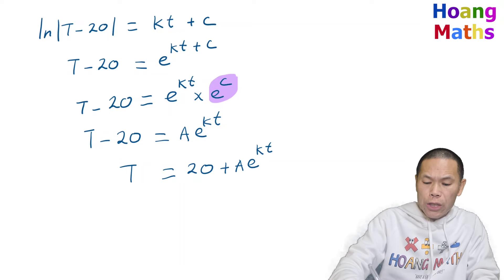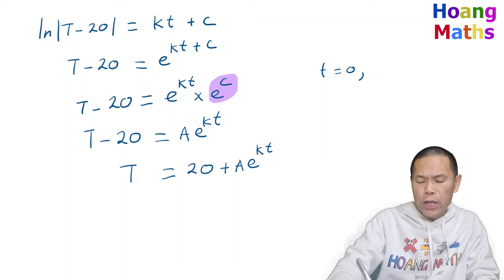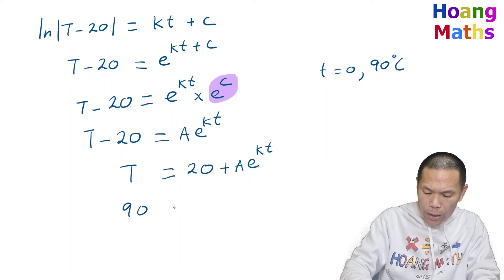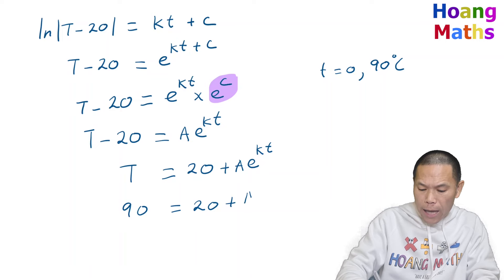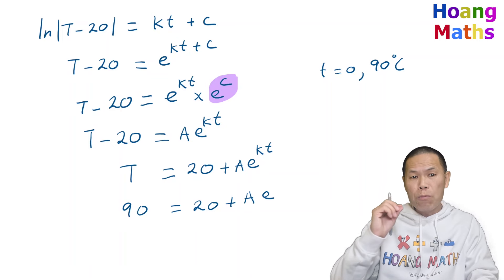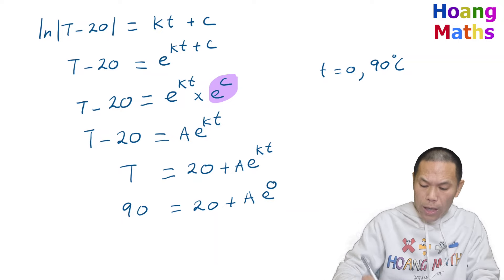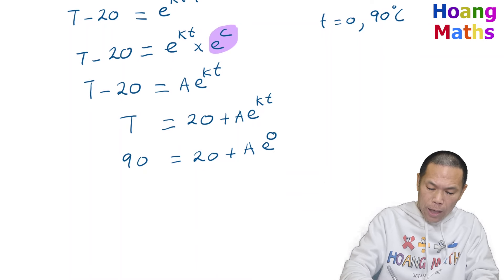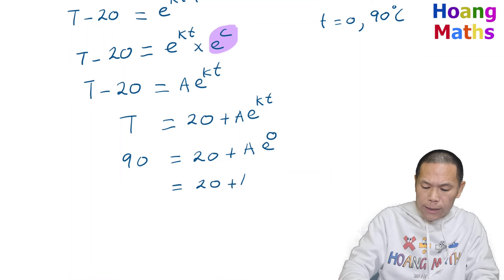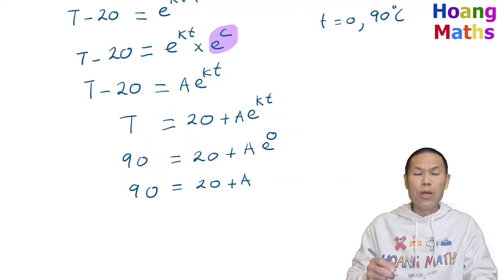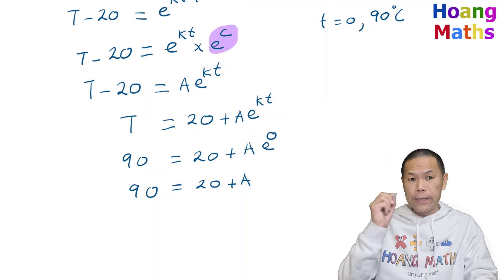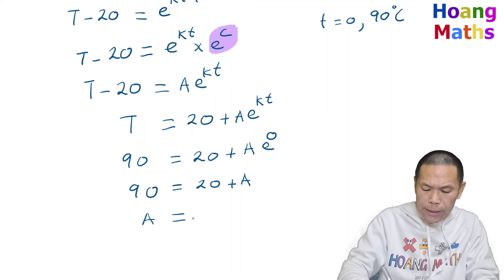Now we use the initial conditions: when t equals zero, the temperature of the coffee is 90 degrees Celsius. So 90 equals 20 plus a·e^(k times 0). Since e to the power of zero is 1, that gives 90 equals 20 plus a. Moving 20 to the other side: a equals 90 minus 20, which is 70.